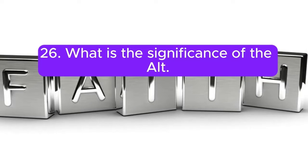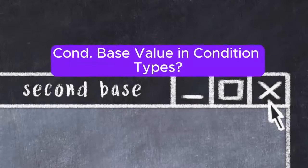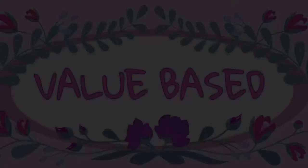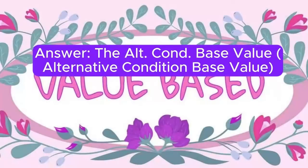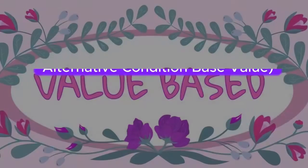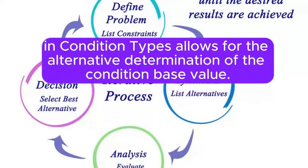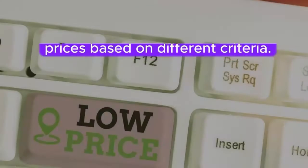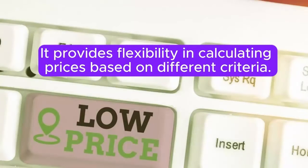Question 26: What is the significance of the ALT COND Base value in condition types? Answer: The ALT COND Base value (alternative condition base value) in condition types allows for the alternative determination of the condition base value. It provides flexibility in calculating prices based on different criteria.